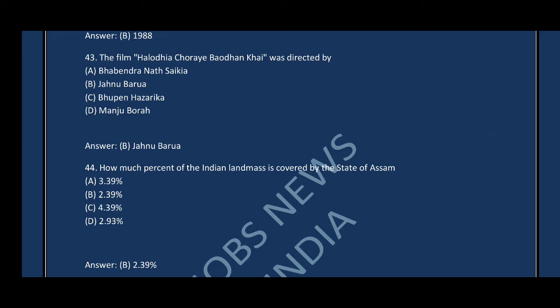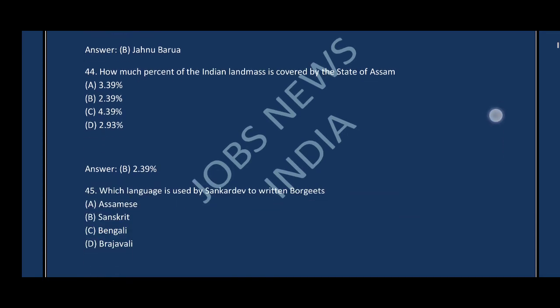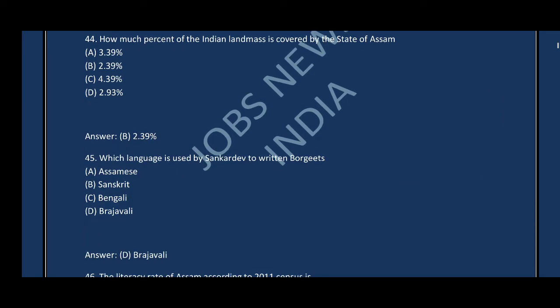Question number forty-four: How much percent of the Indian landmass is covered by the state of Assam? The correct answer is option B — 2.39%. Question number forty-five: Which language did Sankardeva use to write Borgeets? The correct answer is option D — Brajavali.